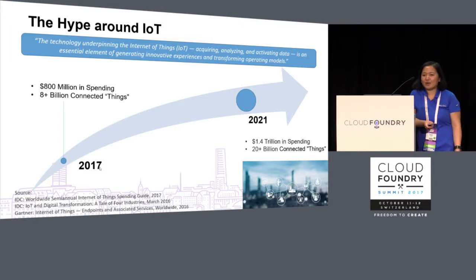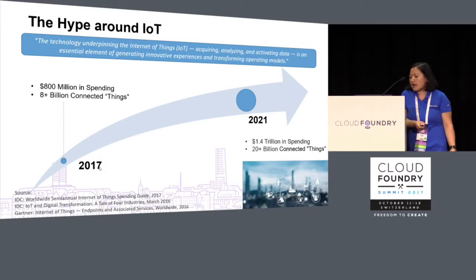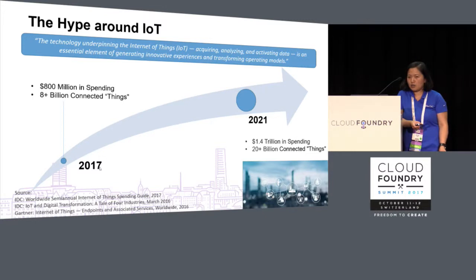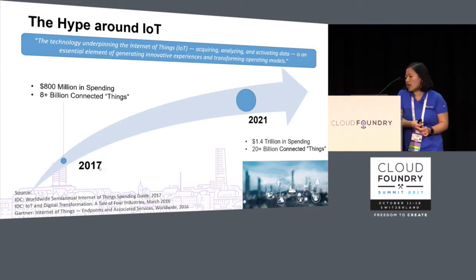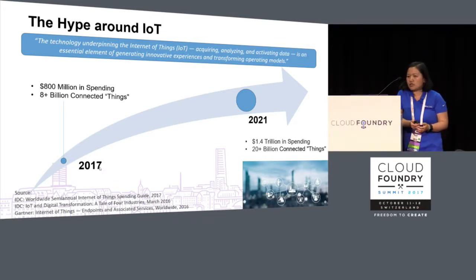We've seen lots of hype around IoT. In the given study as you see on the bottom of the screen, IDC and Gartner shows there being over $800 million in spending related to IoT. There are basically over 8 billion connected things just this year, but these numbers will greatly increase. By the end of 2021, we will have over $1.4 trillion spending on IoT as well as over 20 billion connected things. And of course that poses lots of challenges as well as opportunities.